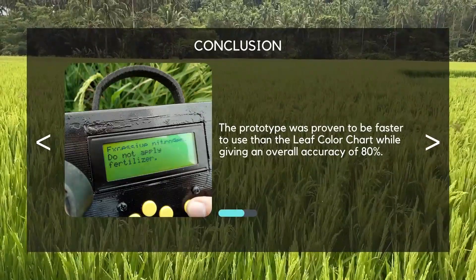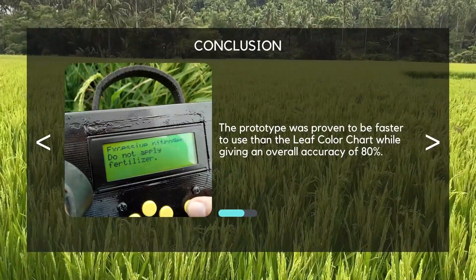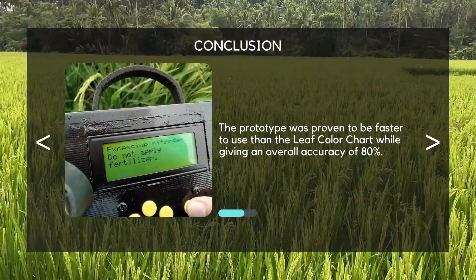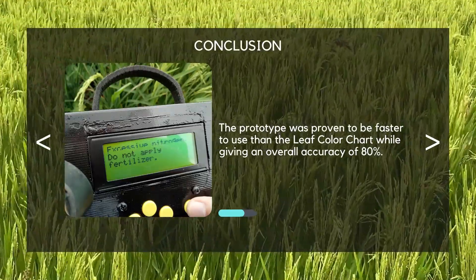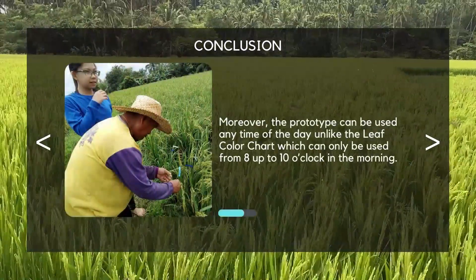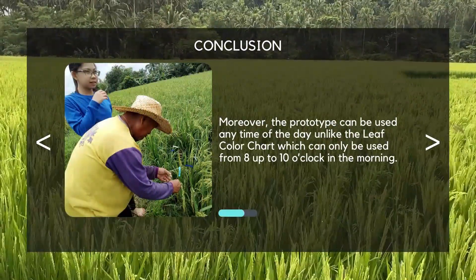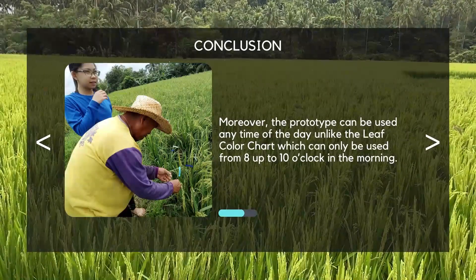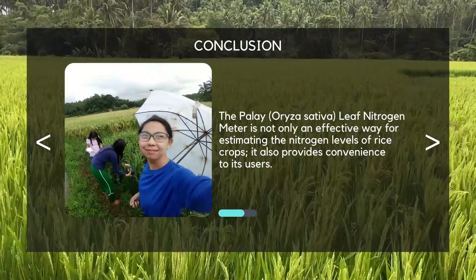The prototype was proven to be faster to use than the leaf color chart, while giving an overall accuracy of 80%. The prototype can be used at any time of the day, unlike the leaf color chart, which can only be used from 8 to 10 o'clock in the morning.